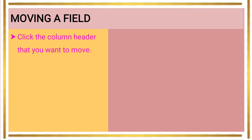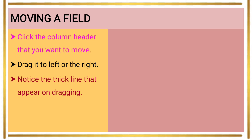To move a particular field, click the column header of that field — that means select the header column that you want to move. Then drag it to the left or right. After selecting it, you can move the field to the right-hand side or left-hand side to your chosen location in the table.